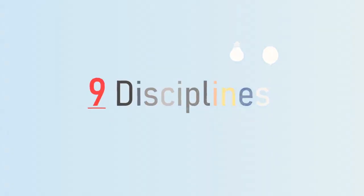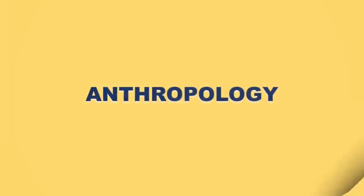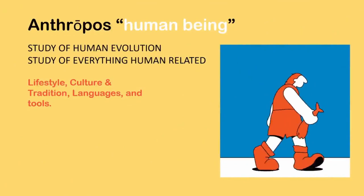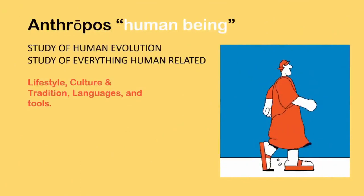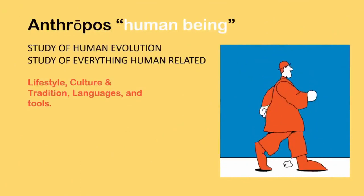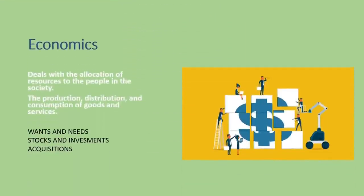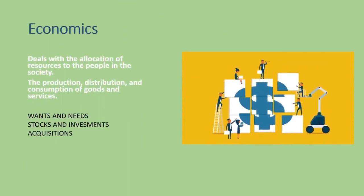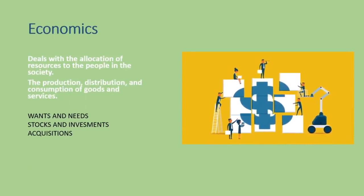Now we have the nine disciplines. First, anthropology — it is derived from the word 'anthropos' meaning human being. It is the study of human evolution and everything human related. Second, economics — it deals with the allocation of resources to the people in the society, reproduction, distribution, and consumption of goods and services.